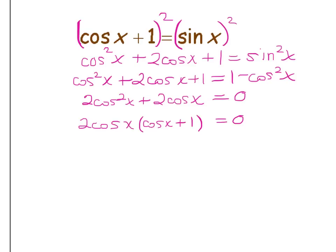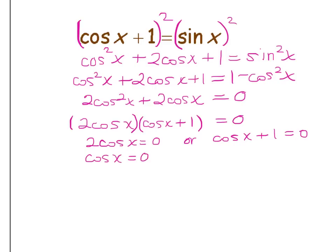I set each factor equal to zero. For two cosine x equals zero, dividing both sides by two gives cosine x equals zero, which happens when x is pi over two or three pi over two. For cosine x plus one equals zero, cosine x equals negative one, which happens when x is pi.